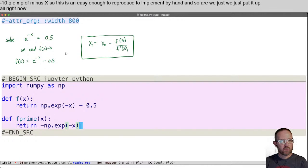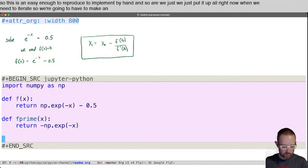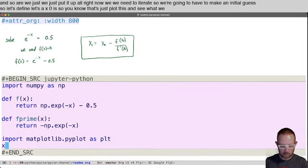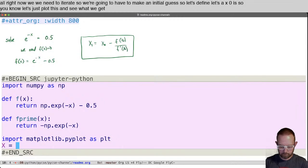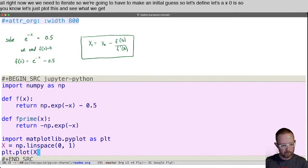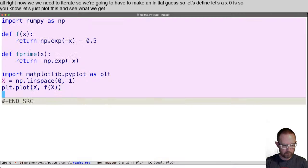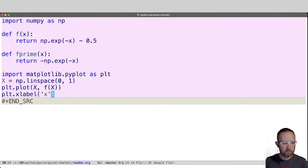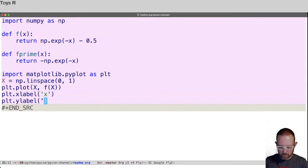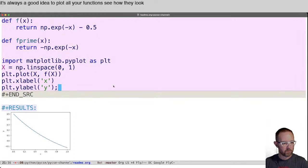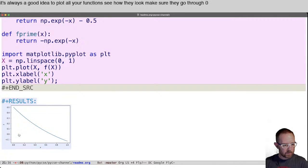All right, now we need to iterate. So we're going to have to make an initial guess. So let's define, let's say x0 is, you know, let's just plot this and see what we get. It's always a good idea to plot your functions. See how they look. Make sure they go through zero. And you can see right here. Let's add a horizontal x line plot dot ax h line at zero.